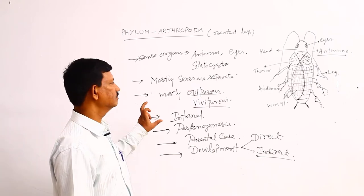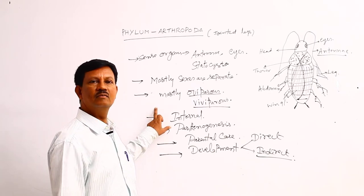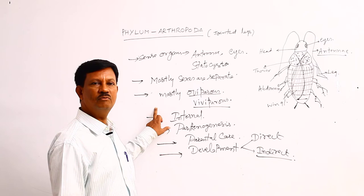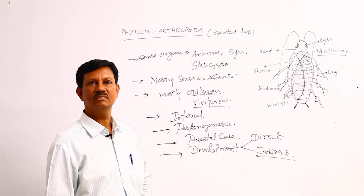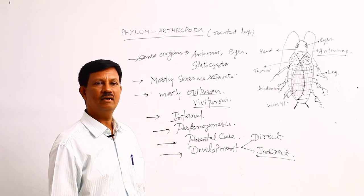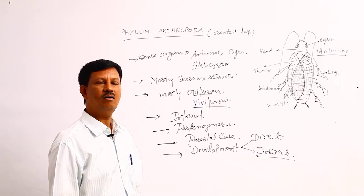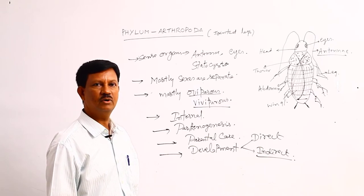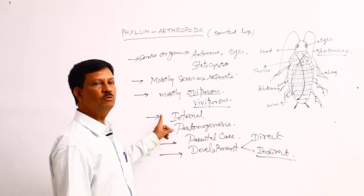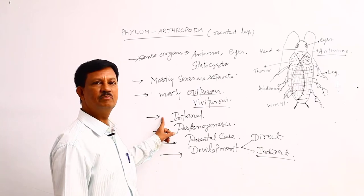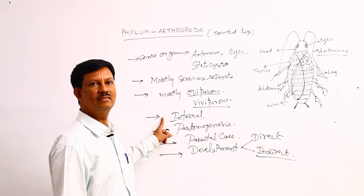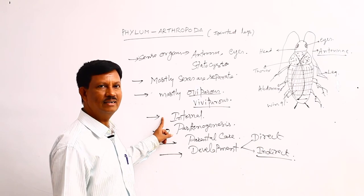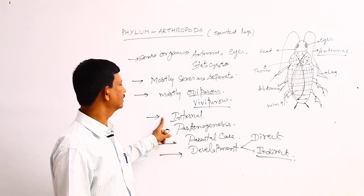The circulatory system is very interesting. Blood is not confined in blood vessels, that is why an open type of circulatory system is found in the phylum Arthropoda. The heart is tubular and always present on the dorsal side of the body. Hemocyanin is the respiratory pigment present, and hemoglobin is absent. That is why blood is not red in color — it is white or light blue in color.